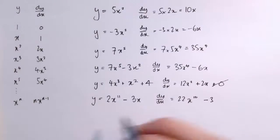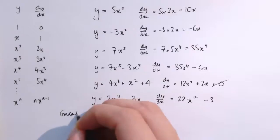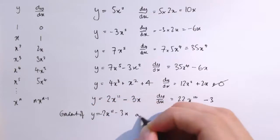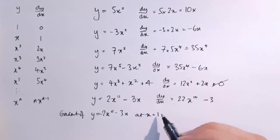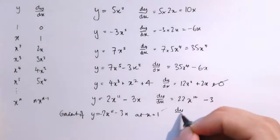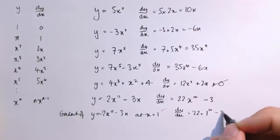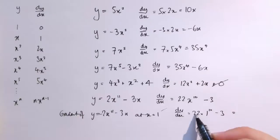And if I wanted to say, well, what's the gradient then of this function of y equals 2x to the 11 minus 3x at x equals 1, I just need to substitute x equals 1 into here. Well, dy/dx is 22 times 1 to the power of 10 minus 3. 1 to the power of 10 is 1. So this is just 22 minus 3, which is 19.